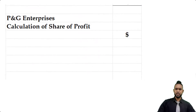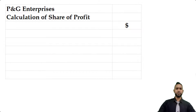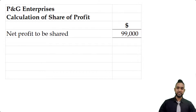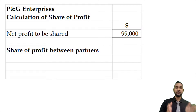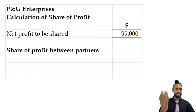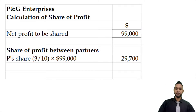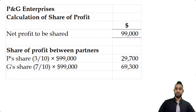Now for sharing in the ratio 3 to 7 — the net profit is still 99,000. We add 3 and 7 to get 10. The 3 applies to P, so P gets 3/10 of 99,000, which is 29,700. G gets the remainder — 7/10 — which is 69,300. When you total those two items, you get 99,000.